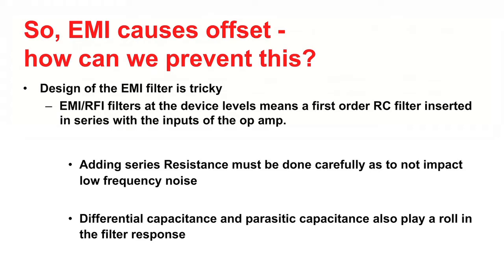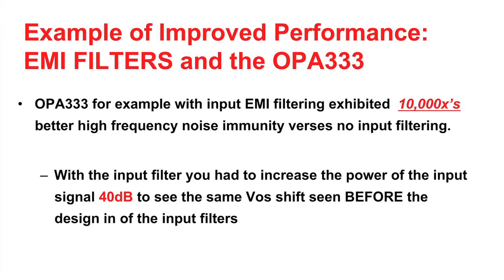When the input filters are implemented after weighing all the design trade-offs mentioned, you have one robust EMI filtered op-amp. An example of one of TI's first products to have input filtering is the OPA333. With the integration of EMI input filtering, this device exhibits 10,000 times better high frequency noise immunity versus no input filtering. This means with the input filtering, one would have to increase the interfering input signal's power by 40 dB to see the same offset shift as seen before the design implementation of the EMI filters.